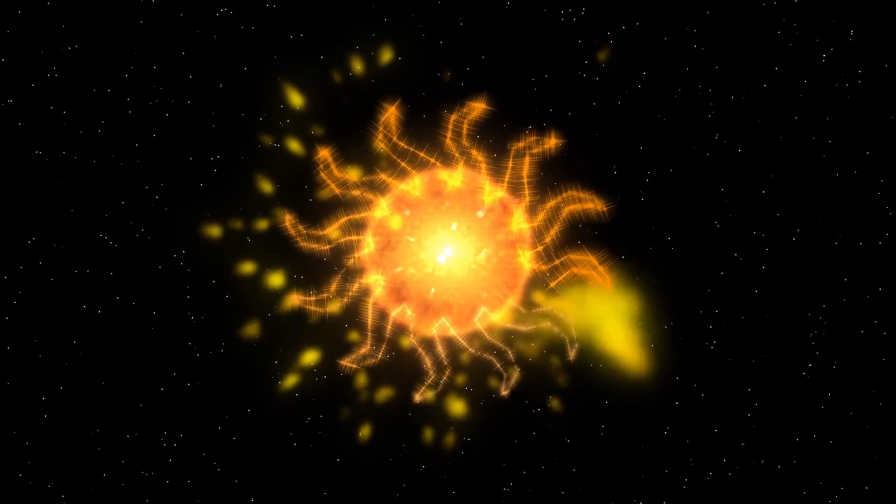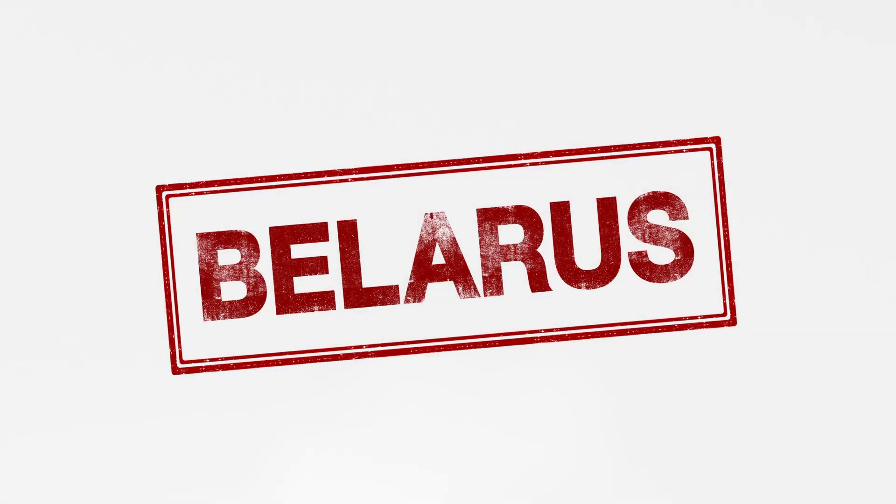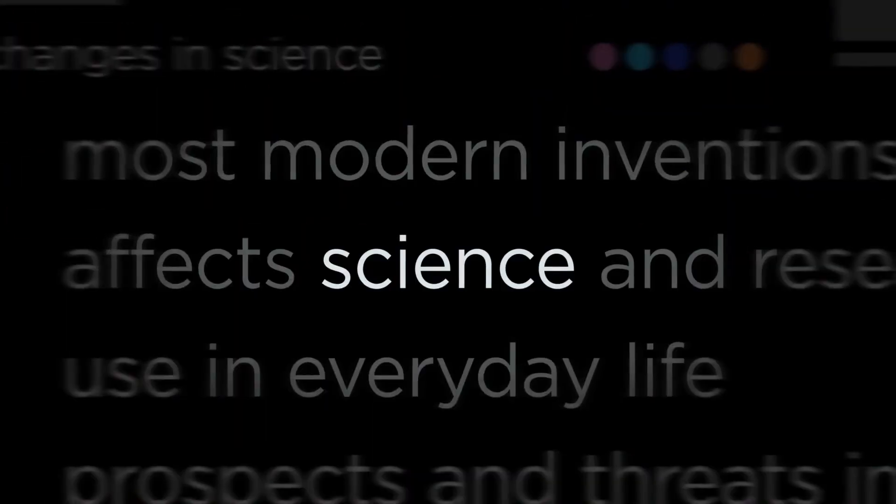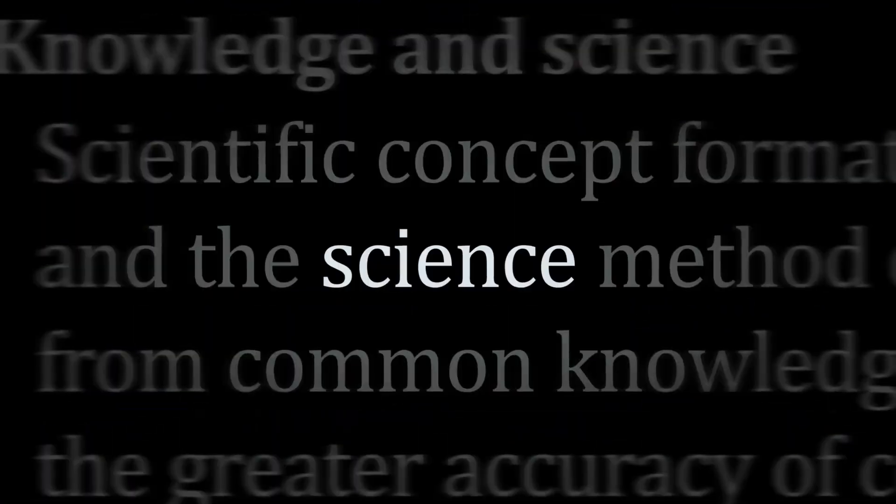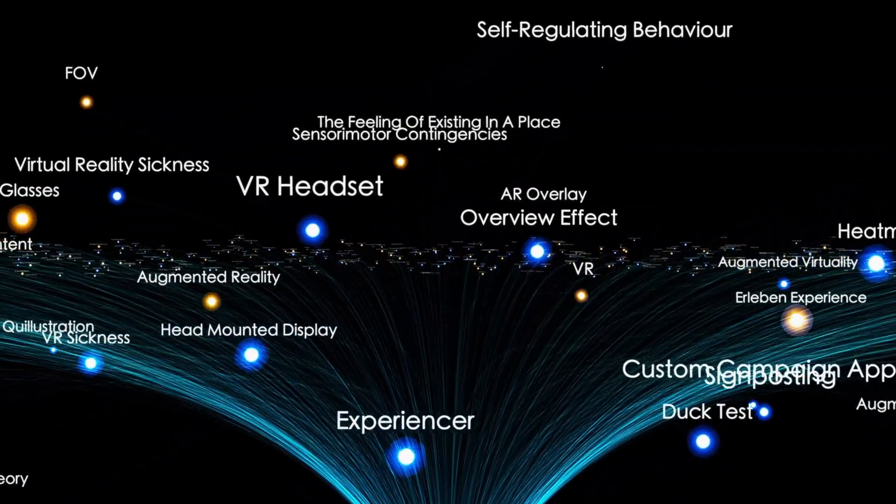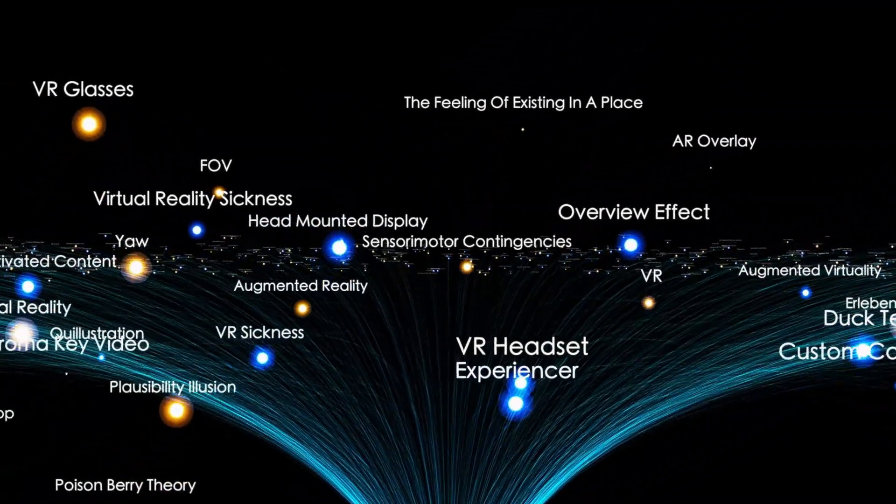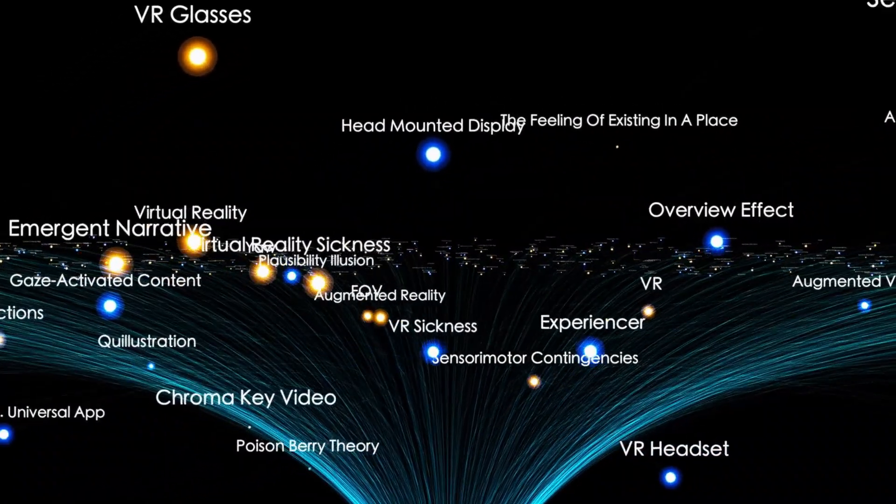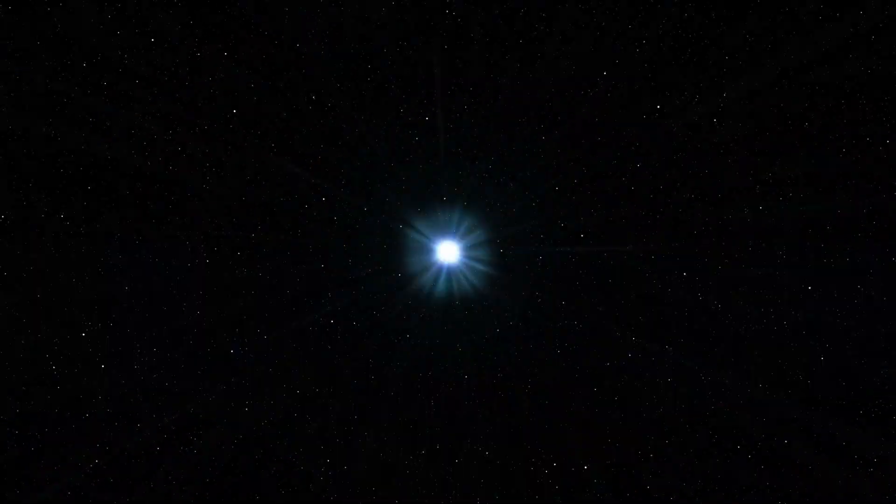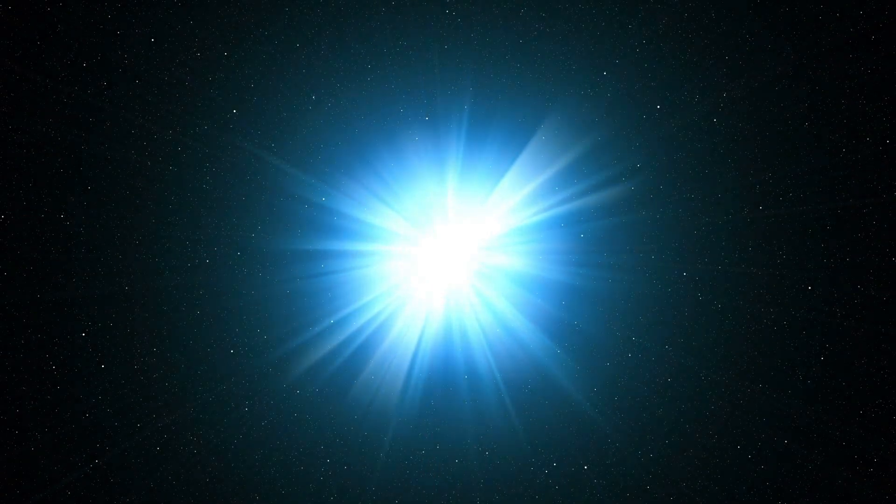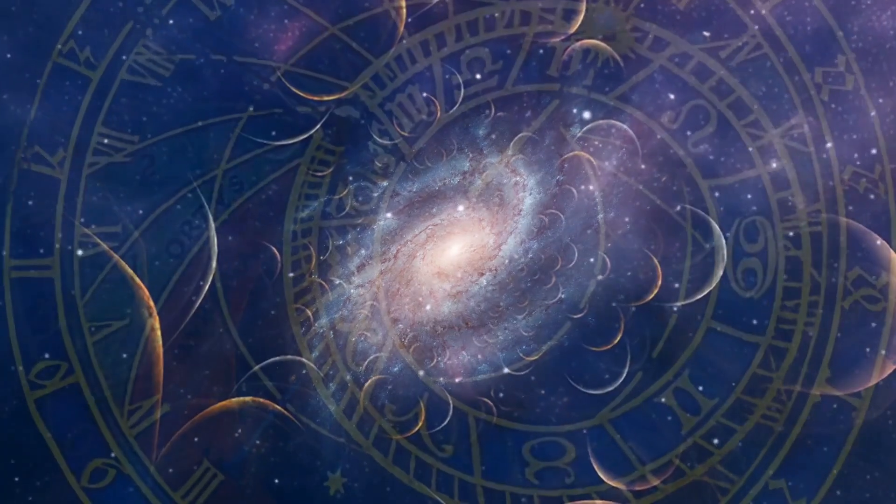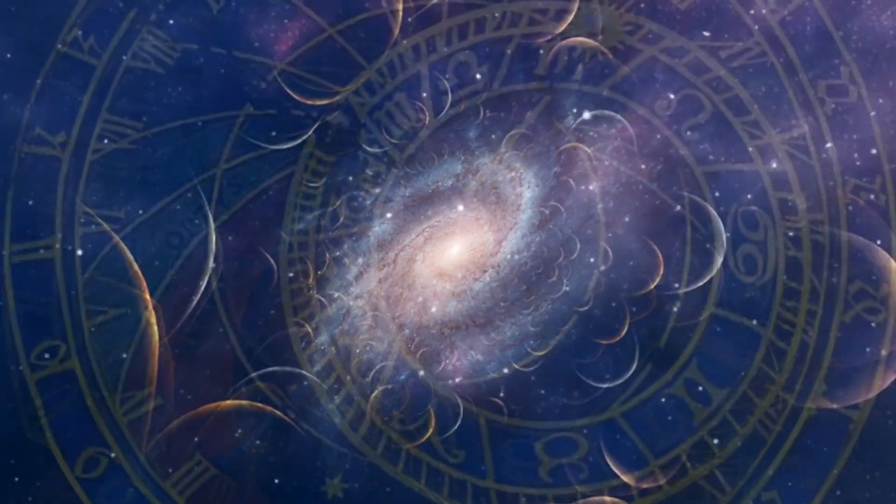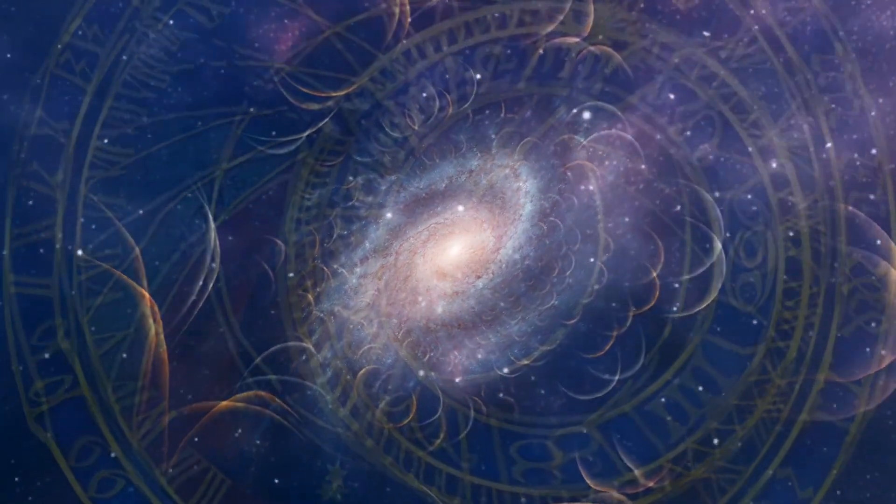Not yet. Betelgeuse wasn't exploding, at least not at that moment. But something extraordinary had occurred. Scientists discovered that the star had experienced a massive surface eruption. This was something far more extreme than the solar flares we see from our sun. Betelgeuse had expelled a colossal cloud of gas and dust from its outer layers, and by chance this vast cloud drifted directly into our line of sight, temporarily obscuring the light from the star and making it appear dimmer to observers on Earth.